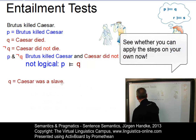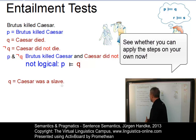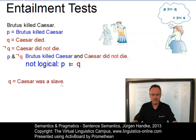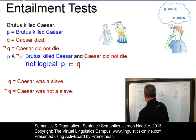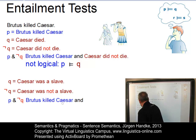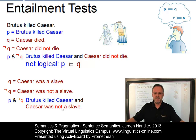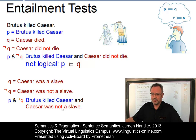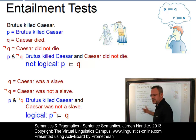Let's try this test again with the same sentence. P is 'Brutus killed Caesar.' Now, let's assume Q is 'Caesar was a slave.' Step one: we assume any proposition Q to be entailed by P. Step two, make Q negative: 'Caesar was not a slave.' Step three, conjoin P and not Q: 'Brutus killed Caesar and Caesar was not a slave.' Step four, does it make sense or not? Well, this could make sense because Caesar could have been anyone, or we don't know whether he was a slave or not. In other words, this is logical. So, P does not entail Q.